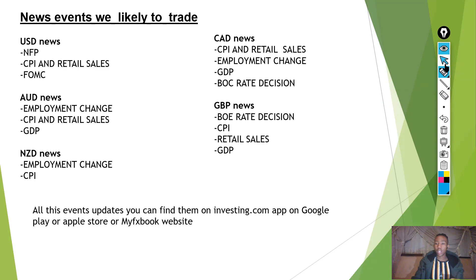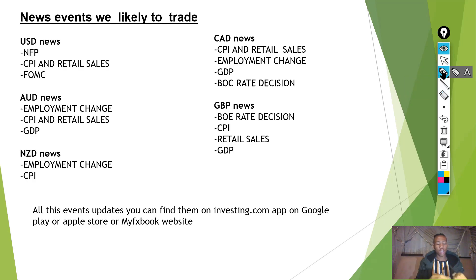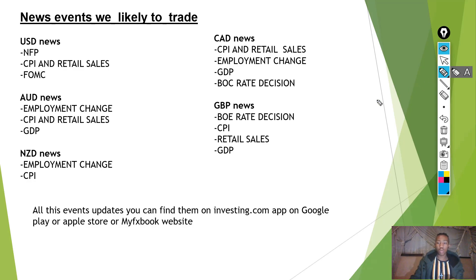The pairs I normally trade on USD news are: when USD is the base currency — USD/JPY and USD/CHF; when USD is the quote currency — JPY/USD and EUR/USD. Those are the pairs most affected by creating high volatility movements when there's USD news.